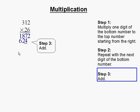Step 3: Add. So once we're done with all our multiplication, we simply add the numbers. And that gets us 8,112. And this completes our problem.